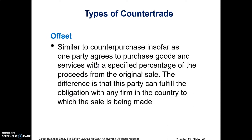The third type is called an offset, which is very similar to the counterpurchase. One party agrees to purchase goods and services with a specified percentage of the proceeds from the original sale. The difference is that this party can fulfill the obligation with any firm in the country to which the sale is being made. For the exporter, this is more attractive than the counterpurchase, as it allows greater freedom and choice.